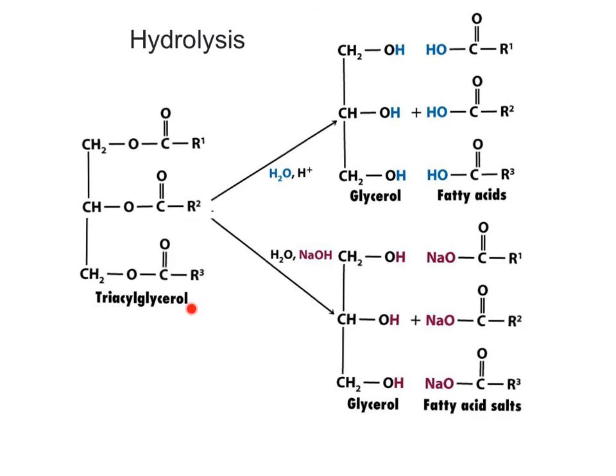Triglycerides undergo hydrolysis of the ester bonds to produce one unit of glycerol and three fatty acids. Because the molecules of triglycerides are too large, they cannot diffuse through the membranes in the intestine. They need to be hydrolyzed by enzymes named lipases. A similar reaction of hydrolysis can take place in the lab by use of acid or by the use of a base.